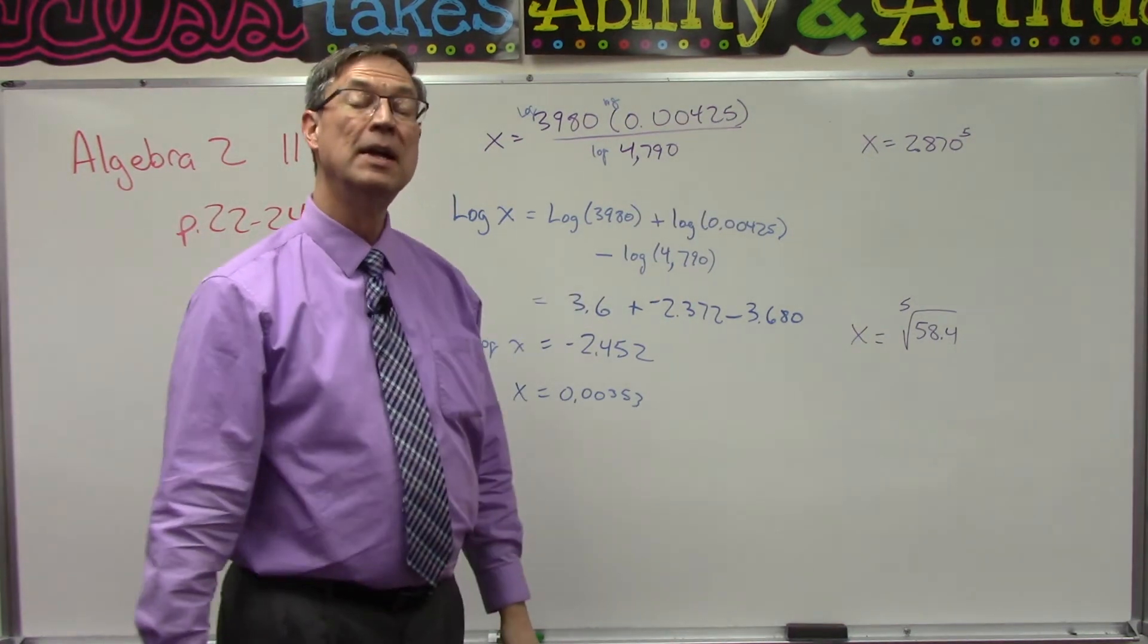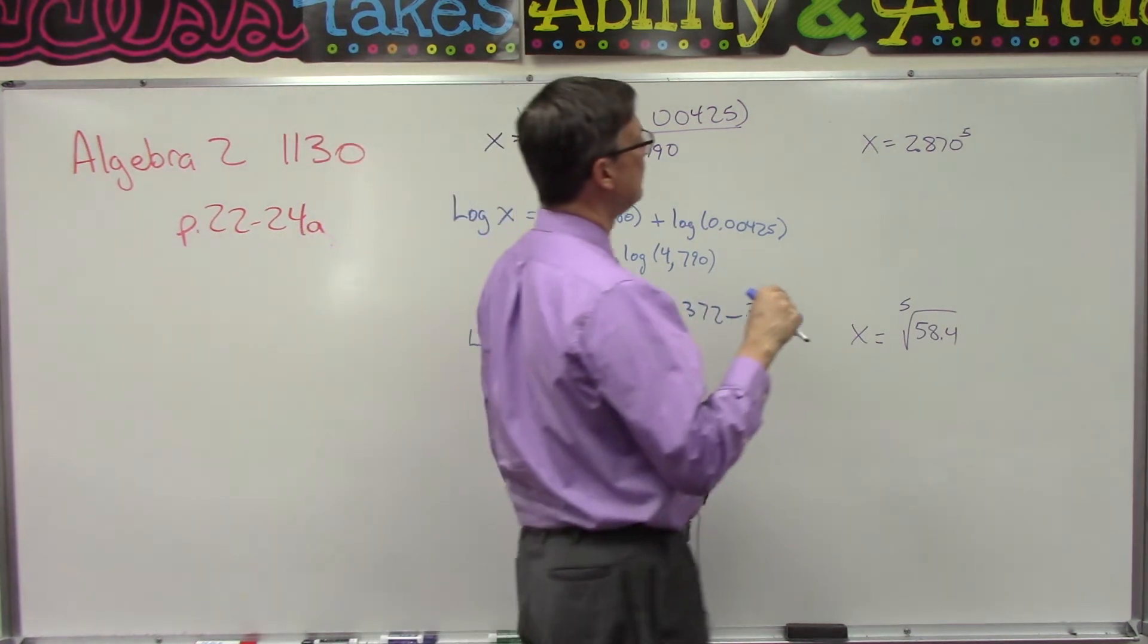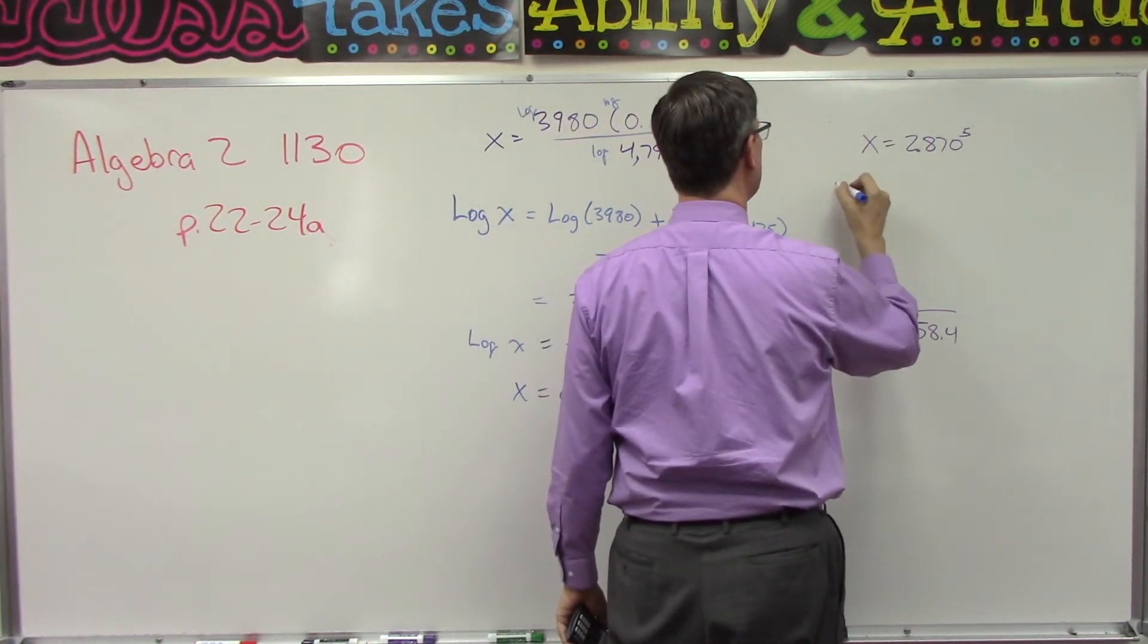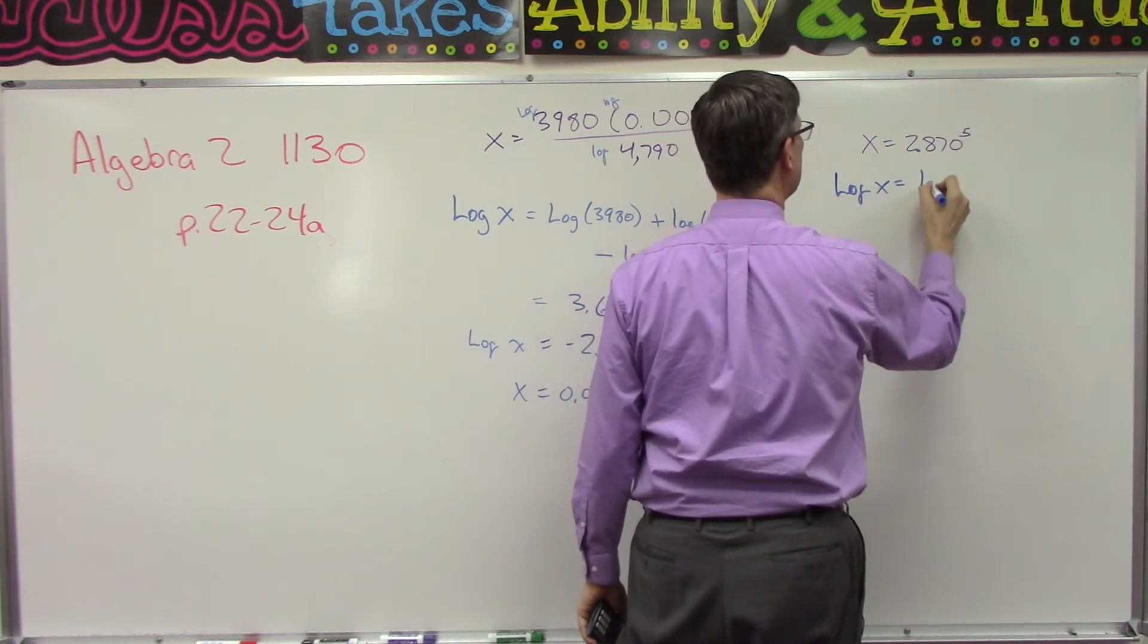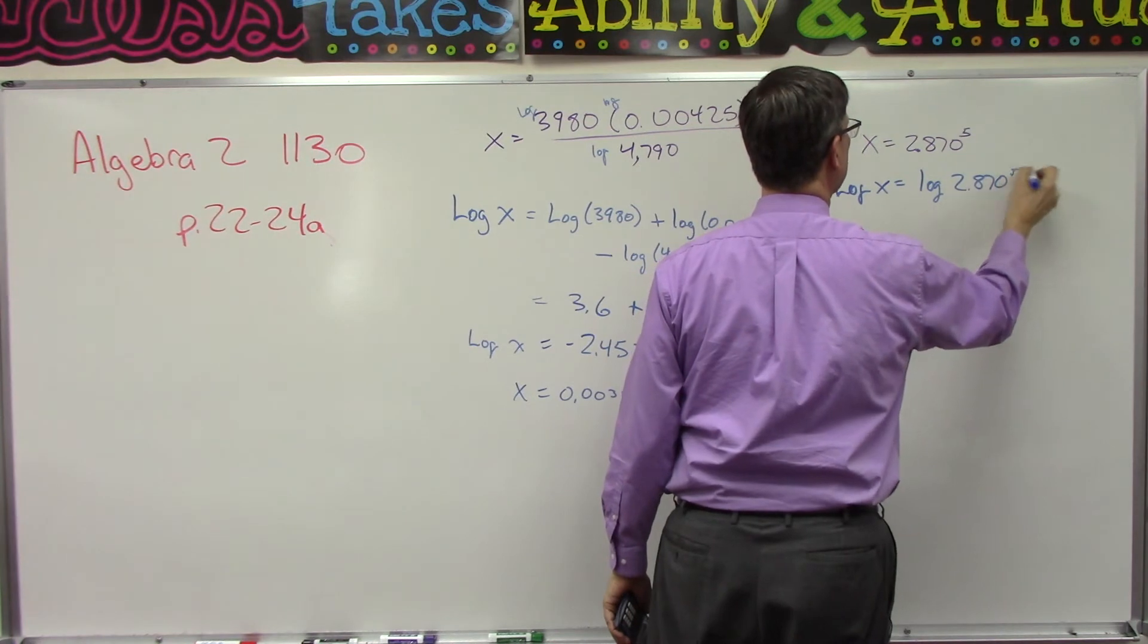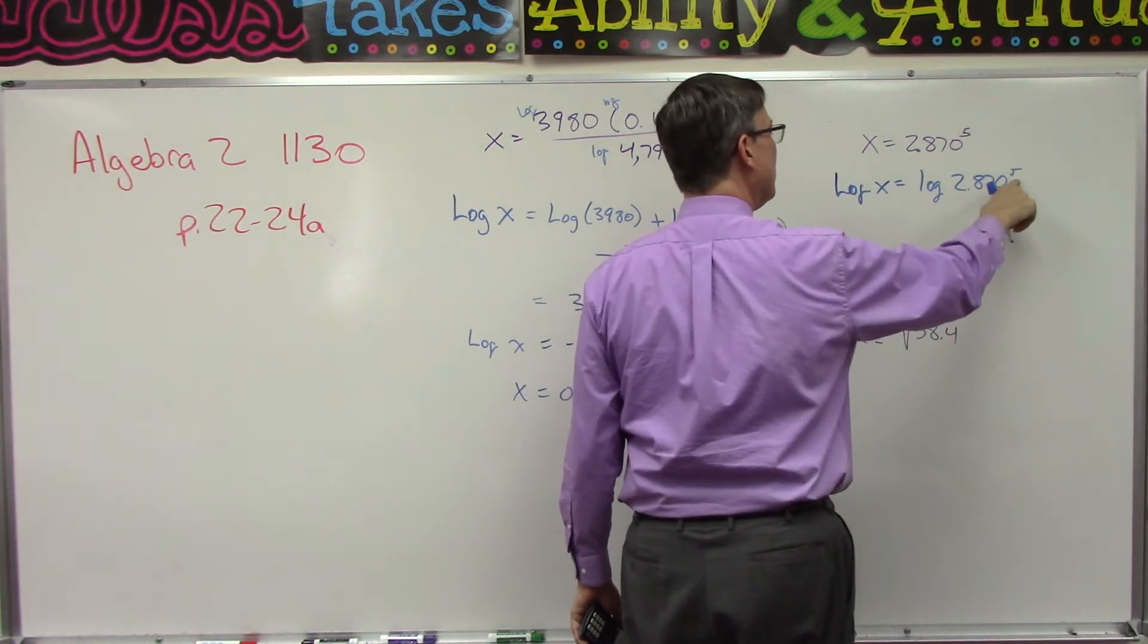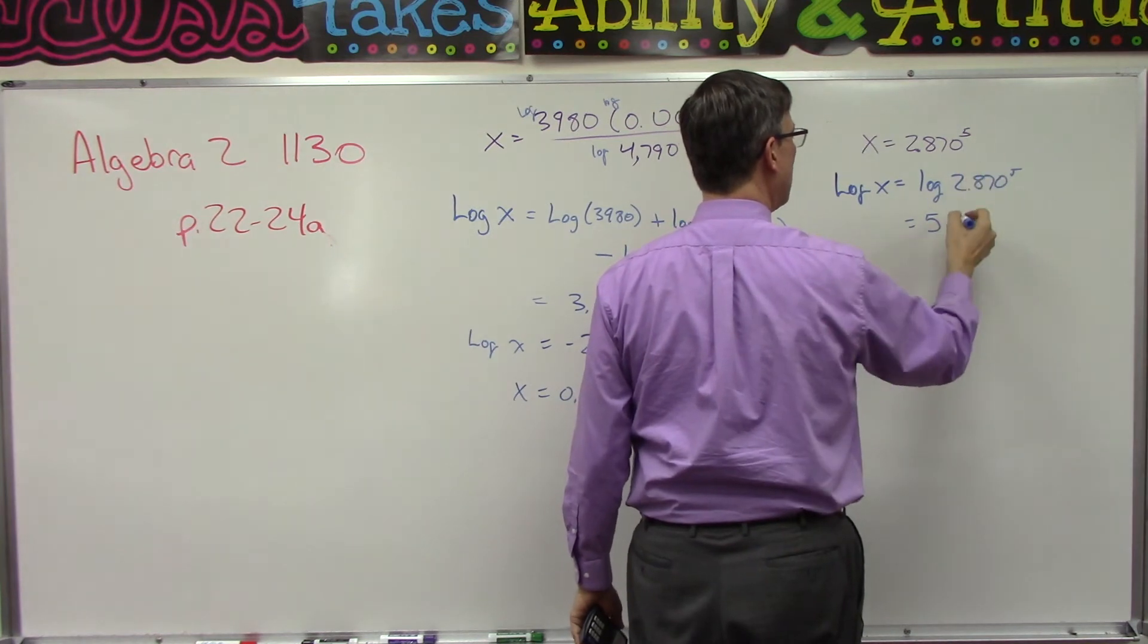Let's try this one up here. This one has a different rule we covered a little bit a few days ago. Let's see if you remember. So I'm going to write log of x equals the log of 2.870 to the fifth power. Now because we have an exponent, that means I'm going to bring the five out front and now I'm going to multiply that times the log of 2.870.